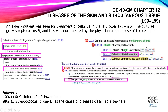Our final code assignment is L03.116 — cellulitis of the lower limb — and B95.1 — streptococcus group B as the cause of disease classified elsewhere. That's it for the skin and subcutaneous tissue chapter. Please take your quiz and let me know if you have any questions; we can review these in class together.